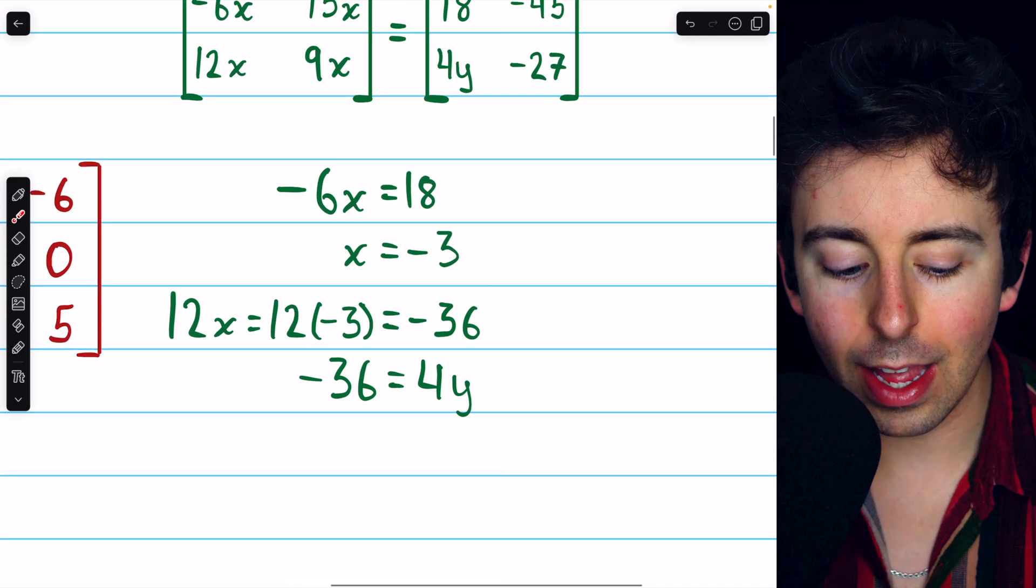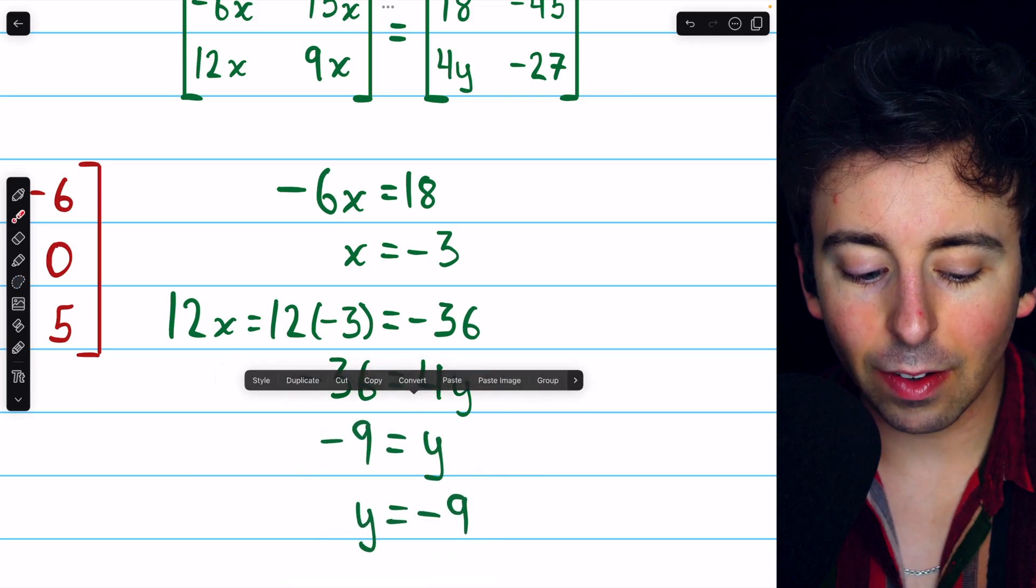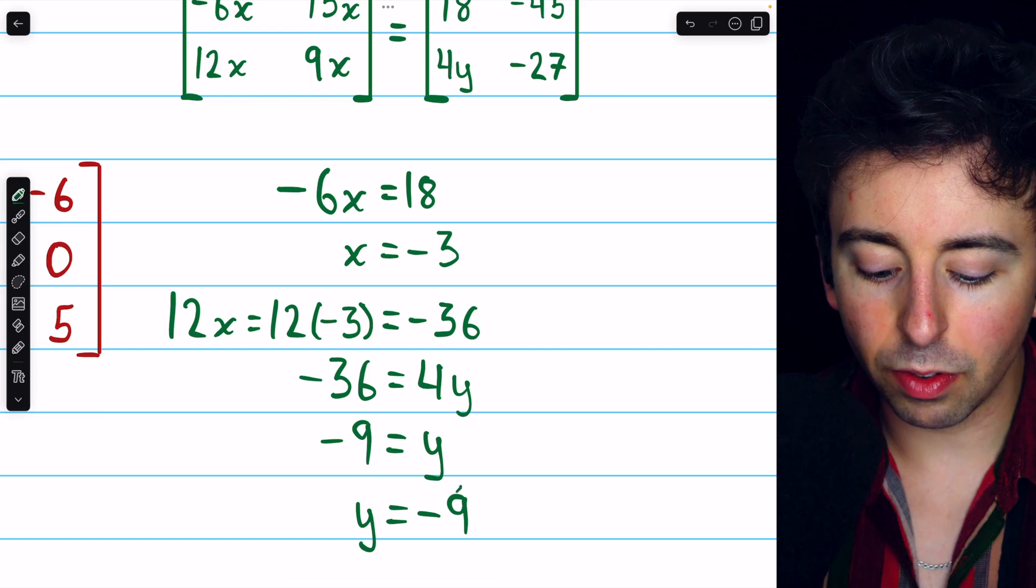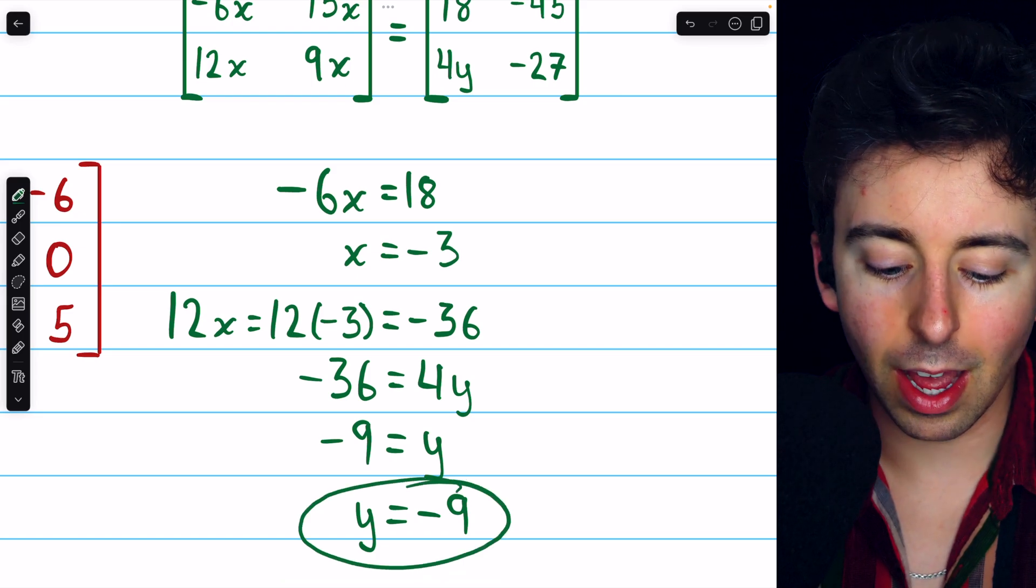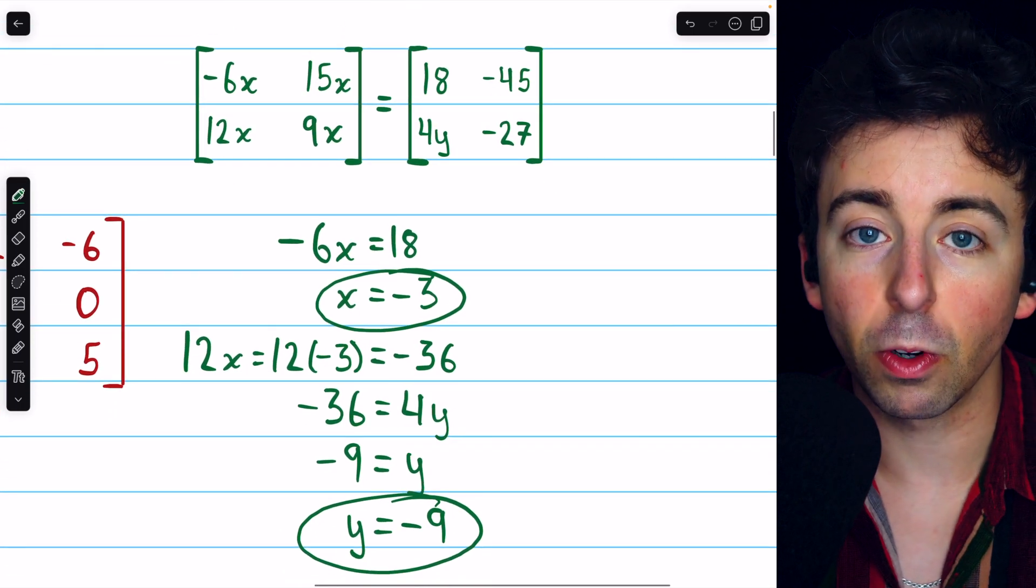And that must equal 4y. Then we can solve for y by dividing both sides of this equation by 4. Negative 36 divided by 4 is negative 9. And so we've solved for y. Y must equal negative 9. And of course, x equals negative 3. And that's how we solve this matrix equation.